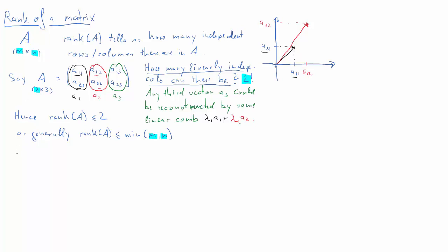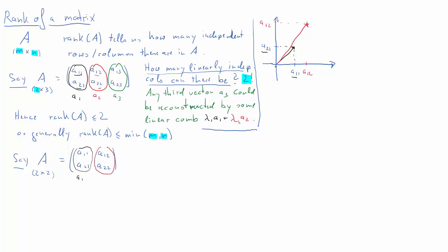Let's think about the significance of the rank of a matrix and why we need it. We'll consider a two by two square matrix A. We have two columns — the first column and the second column, already represented in our image. Since these two vectors do not lie on top of each other, the red vector A2 and the black vector A1 are two linearly independent vectors.